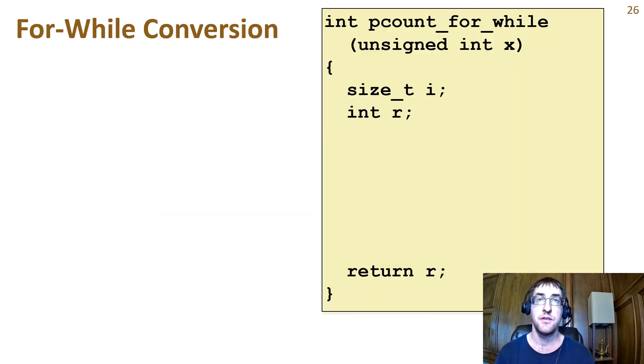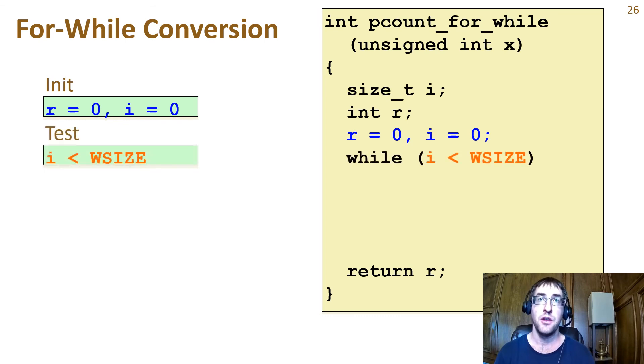So we can convert the popcount for into a popcount for while. The init statement will go first before the loop starts. Then we'll add the while statement with the test checking i is less than WSIZE. We're going to put the update at the end of the body, so I left a little space here. And we add the loop body before the update.